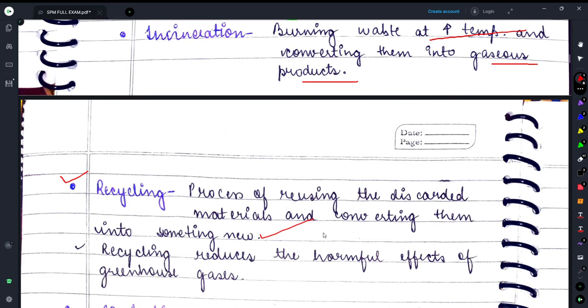For example, you must have seen rough notebooks with dark pages. Those dark pages were known to be recycled notebooks.